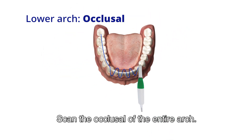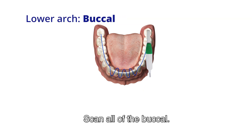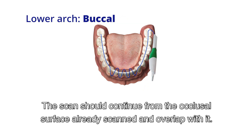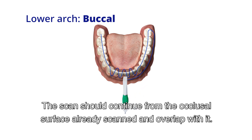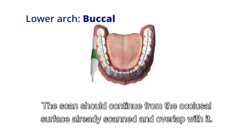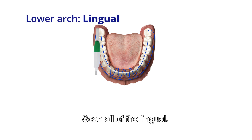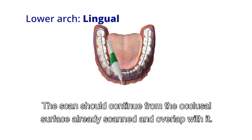Scan the occlusal of the entire arch. Scan all of the buccal — the scan should continue from the occlusal surface already scanned and overlap with it. Then scan all of the lingual, continuing from the occlusal surface already scanned and overlapping with it.